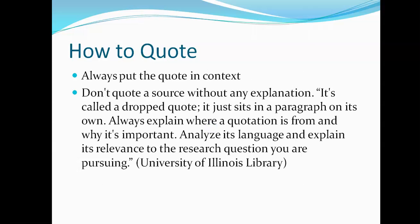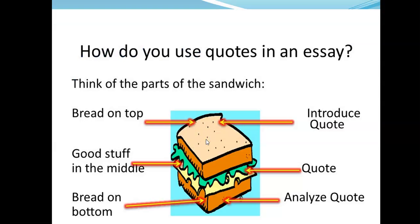So, it's important to put quotes in context. You can't just drop them in and expect the audience to understand what the meaning of the quote is or how it fits into your argument. I copied this from the University of Illinois library website because I think it's a very good explanation of what to do and what not to do. It says, don't quote a source without any explanation. It's called a dropped quote. It just sits in a paragraph on its own. Always explain where a quotation is from and why it's important. Analyze its language and explain its relevance to the research question you are pursuing. Basically, what they're saying is something that many experts suggest, which is to use a quotation sandwich. And the quotation sandwich, like a sandwich, has three parts. The bread on either end and the good stuff in the middle.